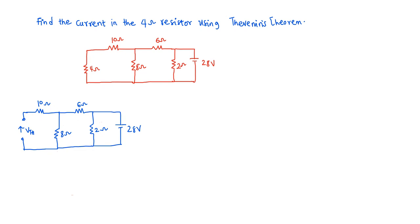Hello, welcome to this lesson. In this video, you are going to solve this question I have on the screen. The question says: find the current in a 4 ohm resistor using Thevenin's theorem. So let's check out how you are going to solve this question.